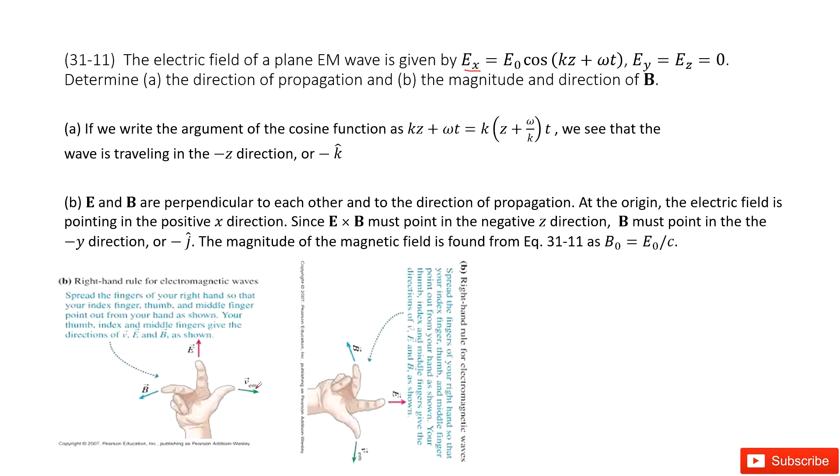Now in this case, we can see E, the electric field, travels in the X direction. So we can rotate this picture in your textbook. You rotate it, and you can see this becomes X.